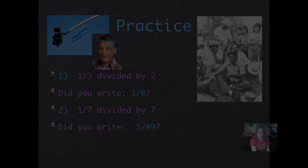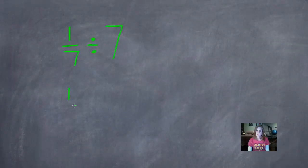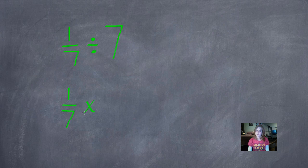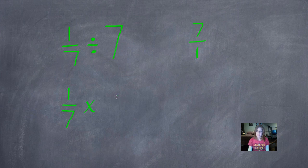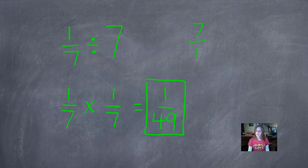Let's do that one together. So we'll rewrite 1 seventh, use multiplication, and the reciprocal of 7 is 1 seventh. So 1 times 1 is 1, and 7 times 7 is 49. 1 forty-ninth.